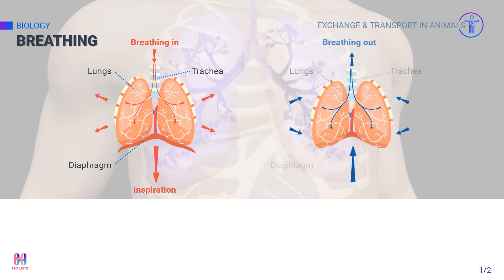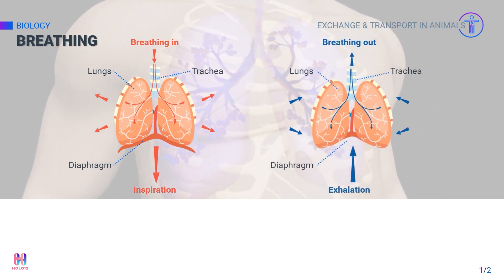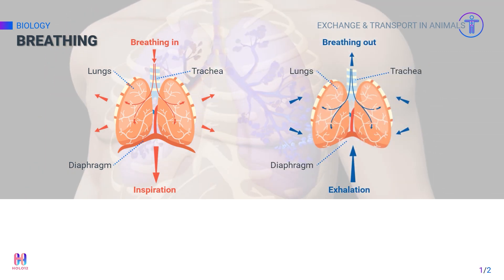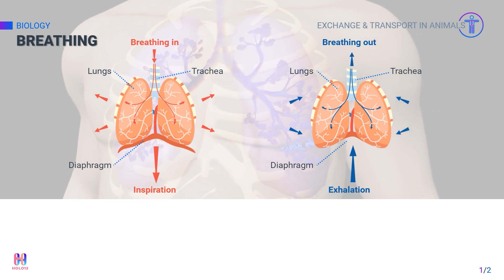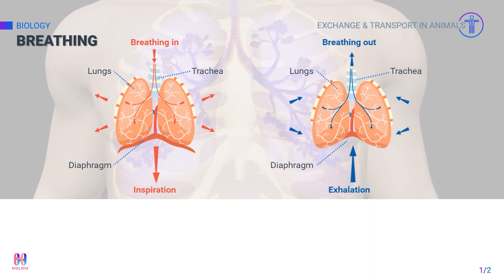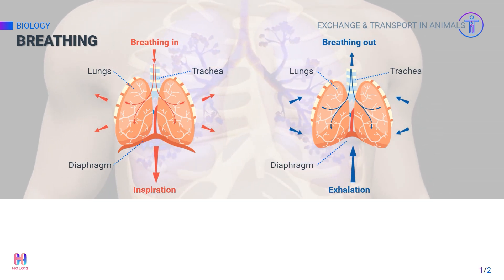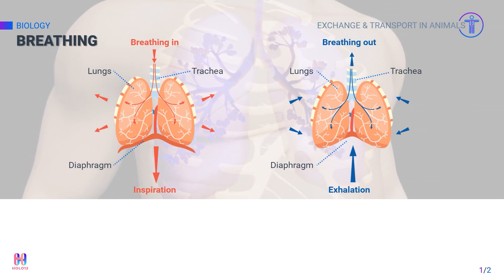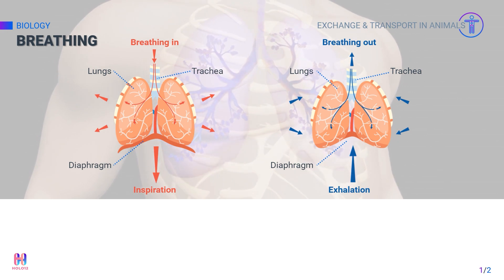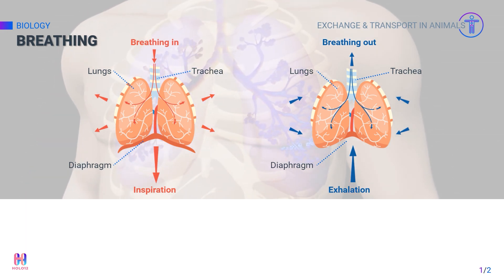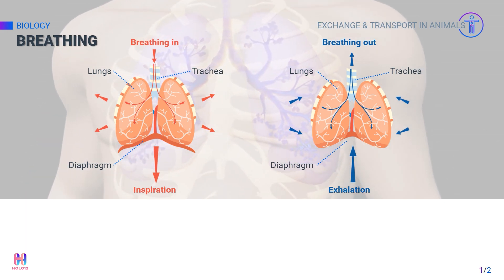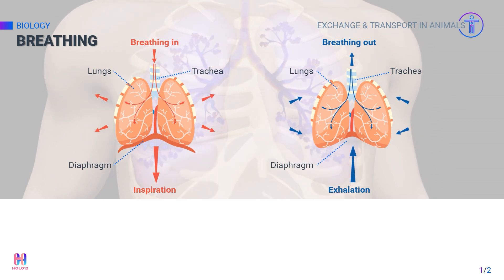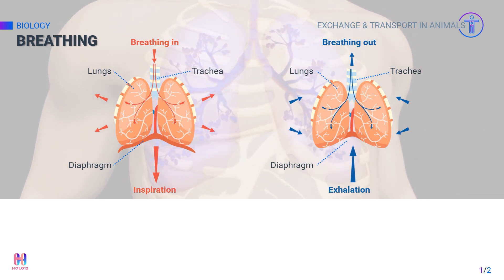During expiration or exhalation, the intercostal muscles relax, moving the ribs inwards and downwards to their original position. The diaphragm also relaxes and moves upwards back to its original dome shape, which reduces the space in the thoracic cavity and the air is forced out.